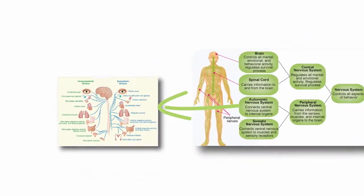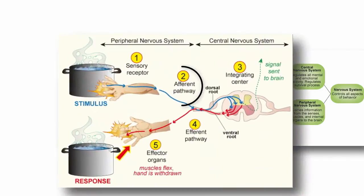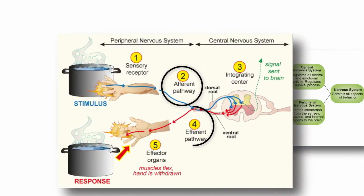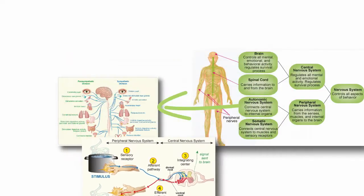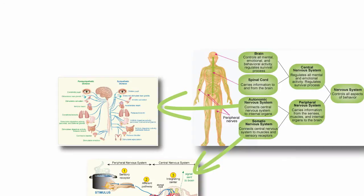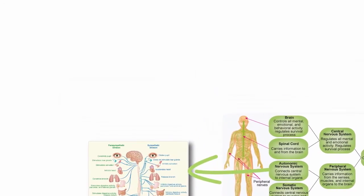Within the somatic system are afferent neurons and efferent neurons. The two divisions of the central nervous system are the spinal cord and the brain.